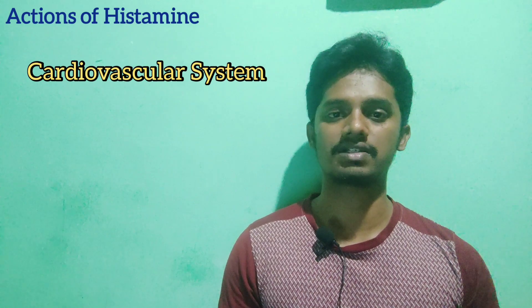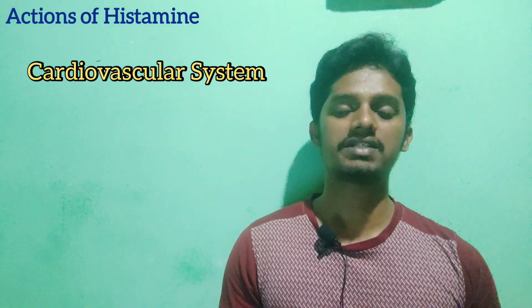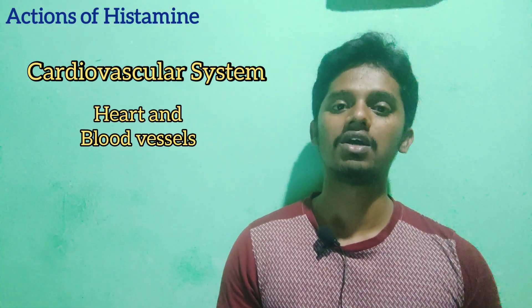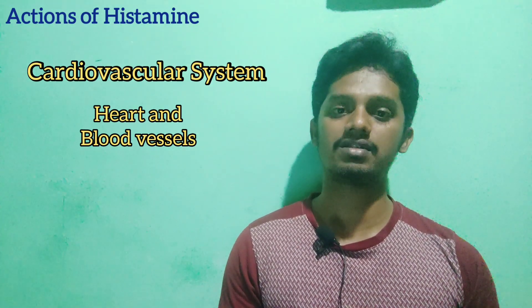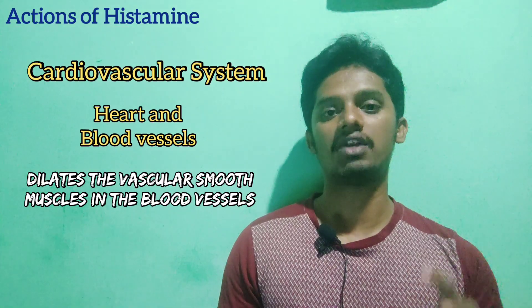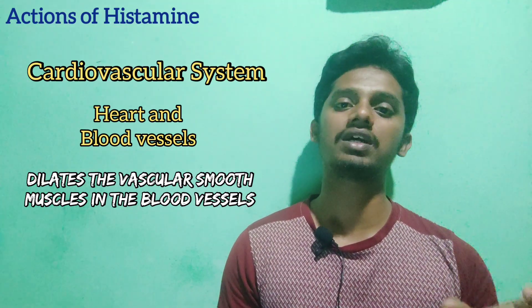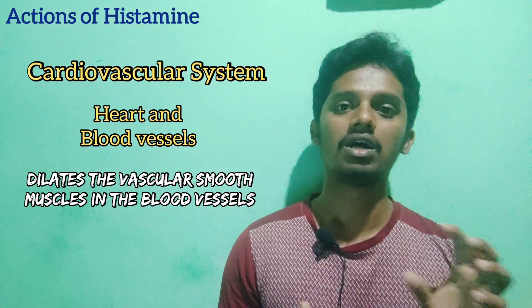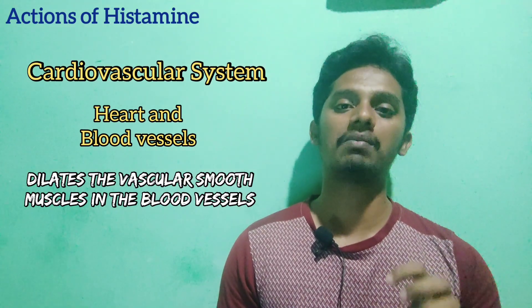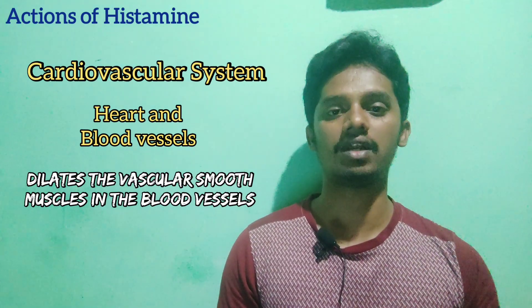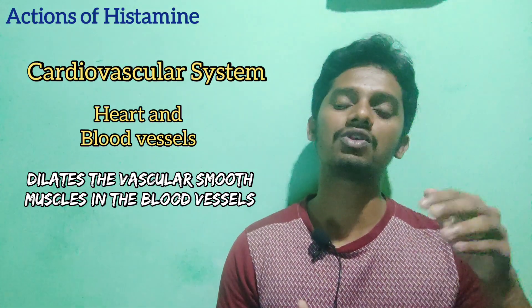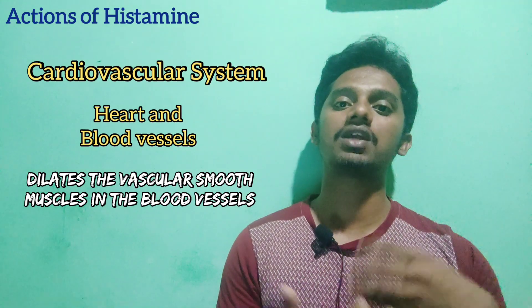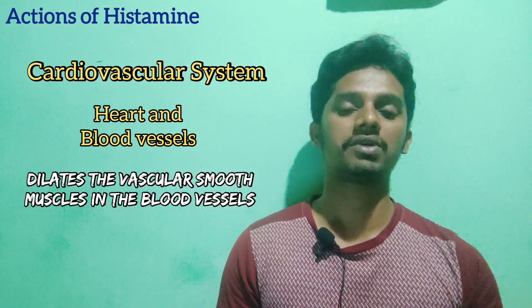First, let's talk about the cardiovascular system, which consists of the heart and blood vessels. Histamine dilates the blood vessels. When blood vessels dilate, the size increases but the blood volume remains the same, so the pressure is reduced — this is called low blood pressure, or hypotension.